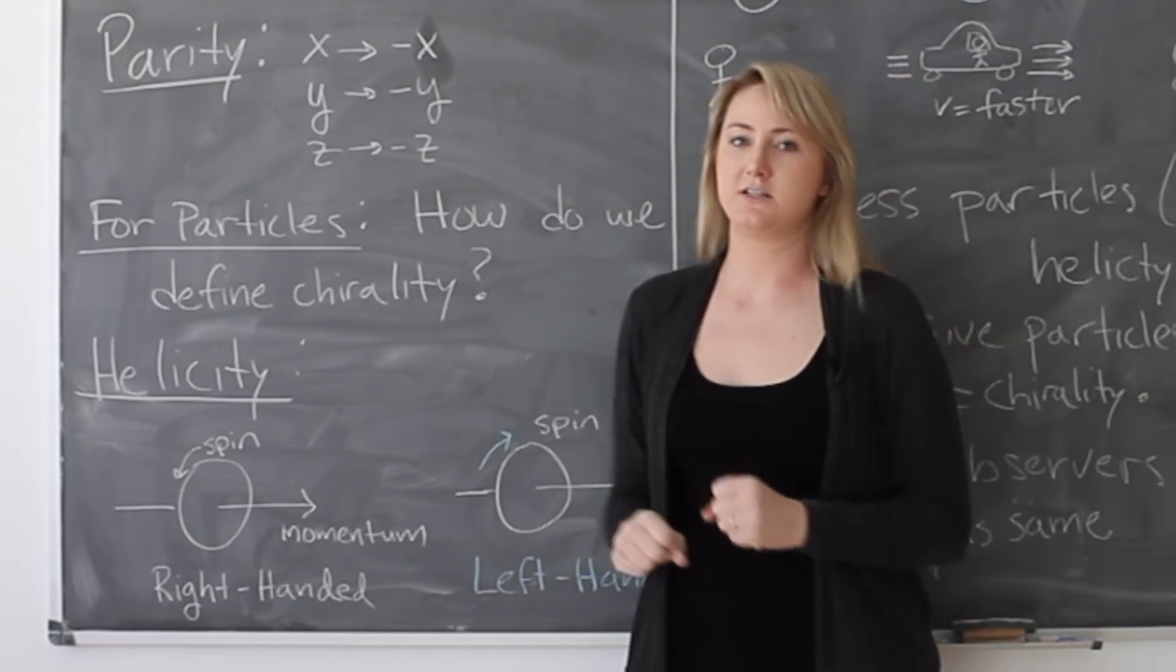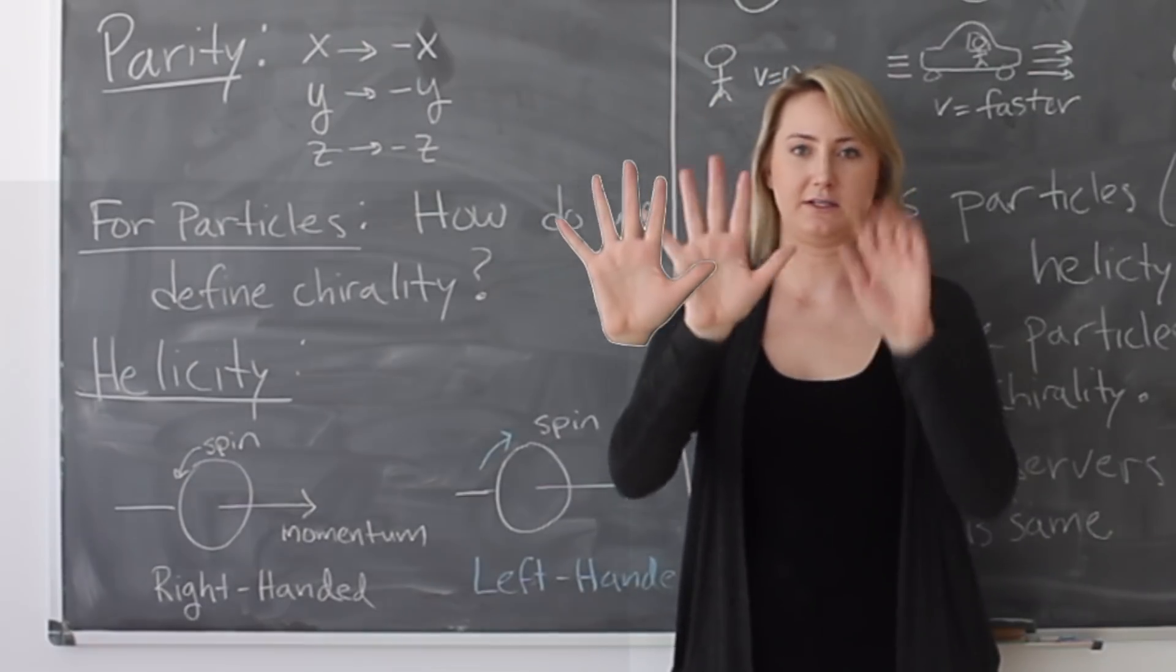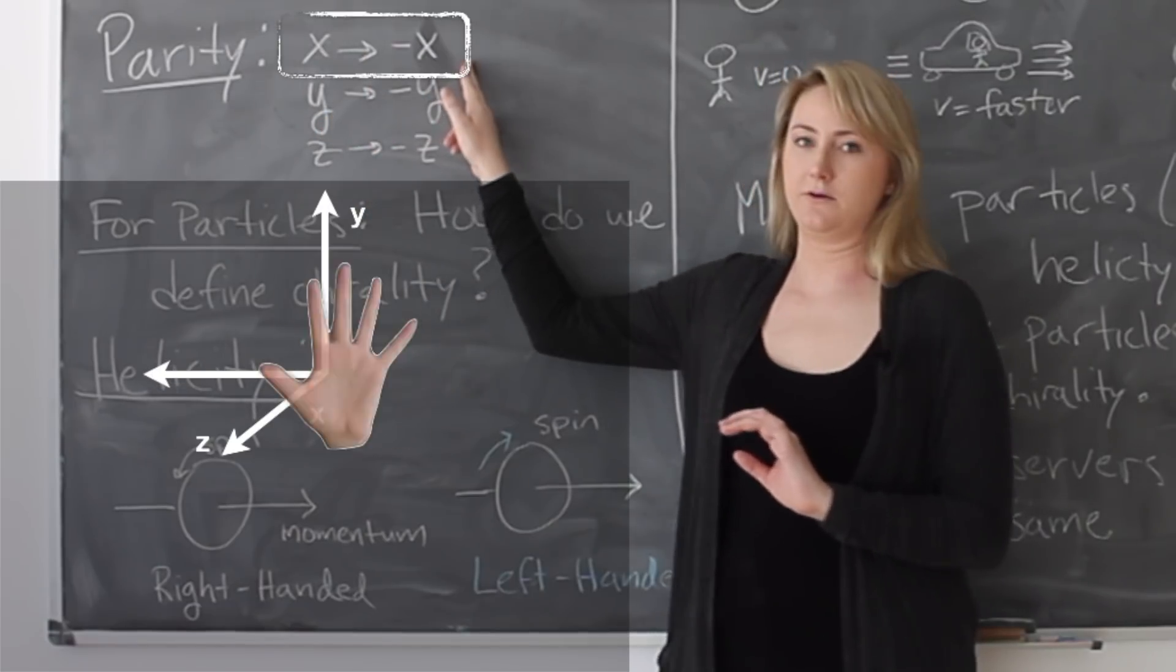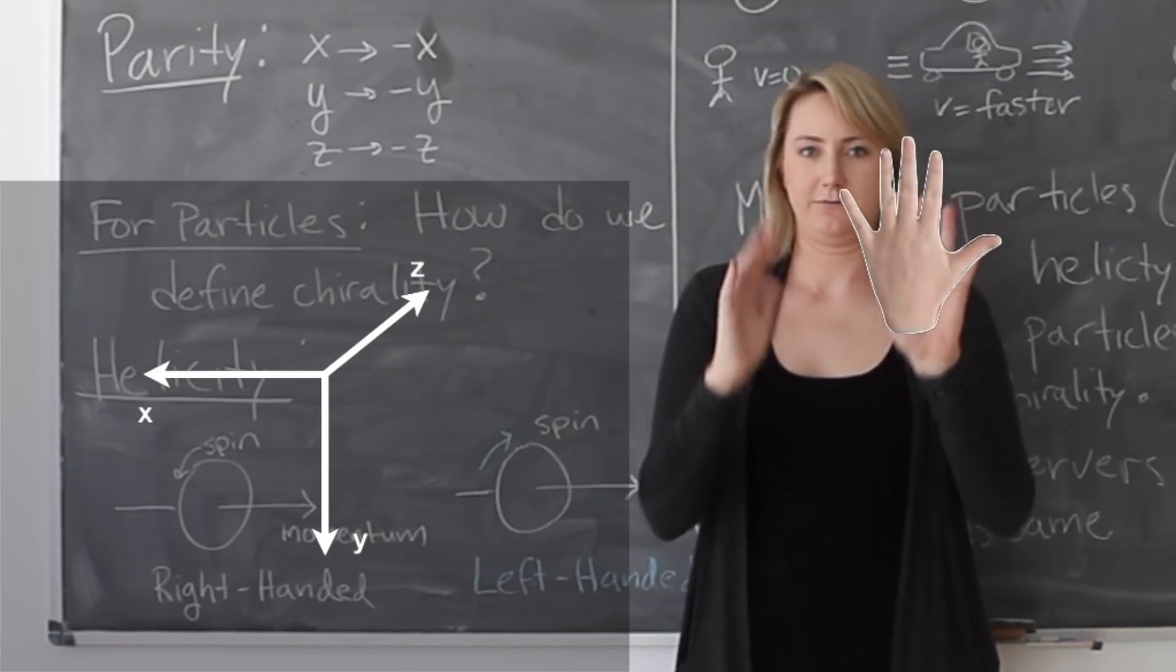So parity is the transformation that is like looking in a mirror. Parity takes my right hand and flips it to look like my left hand. And that means that for every x-coordinate, you go to minus x. For the y, we get minus y and z minus z. So it's just a spatial flip.